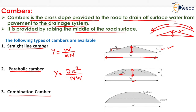We can compute the value of Y for parabolic camber, which will be equal to 2x² upon NW. That is the profile of combination camber — in the starting portion, straight line camber is provided, and in the middle portion, parabolic camber is provided. So it is a combination camber.